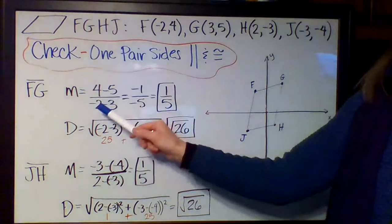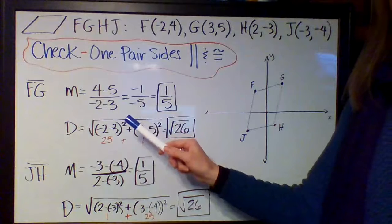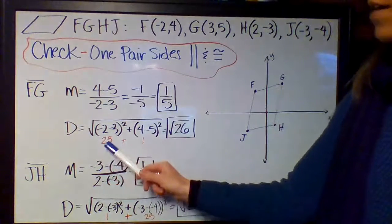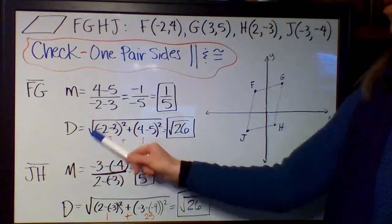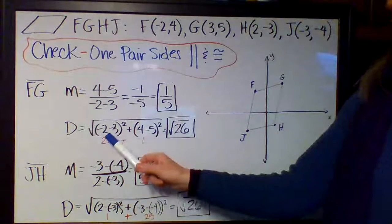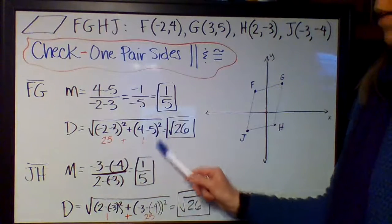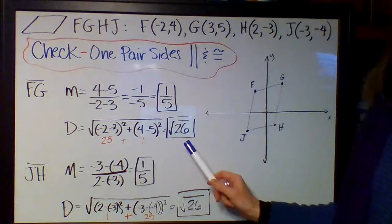Remember, y minus y over x minus x is slope. I also did the distance formula for it. Remember the distance formula is the square root of (x minus x) squared plus (y minus y) squared. I found out that it was the square root of 26.